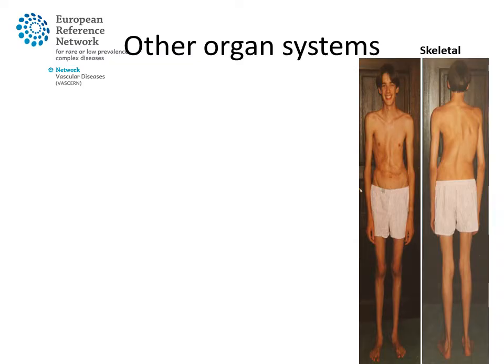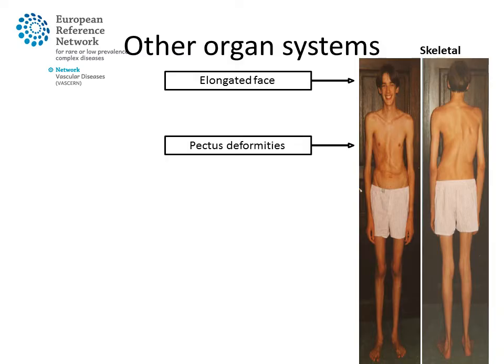Other organ systems involved in Marfan syndrome include the skeletal system, where long bone overgrowth and increased laxity of the ligaments will lead to typical facial characteristics with a long face and high palate. Chest wall deformities in the form of pectus excavatum, a funnel chest, or carinatum, a pigeon breast, are also typical, as are abnormal curvatures of the spine in the form of scoliosis and/or kyphosis.